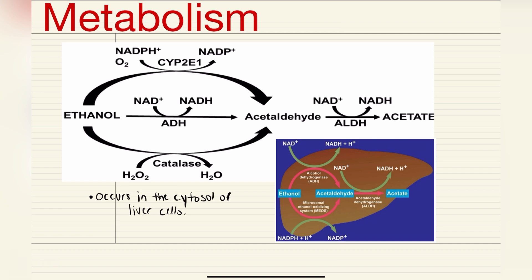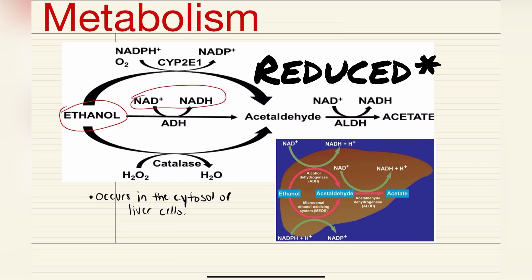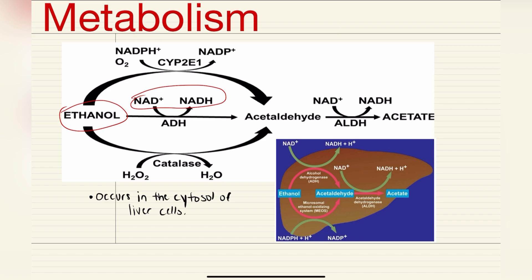Next, we have the metabolism. We start at our ethanol, and through the powers of NAD+, where NAD+ gets oxidized into NADH, allowing ADH — also known as alcohol dehydrogenase — to do its work. So it converts this ethanol into something called acetaldehyde.